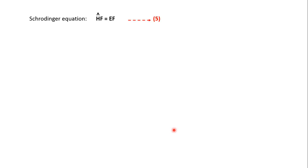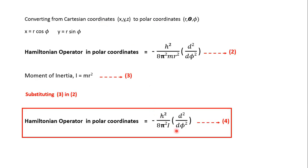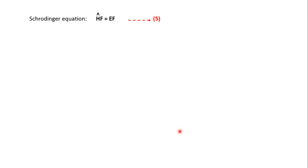Writing the Schrödinger equation as Ĥf = Ef, we use f instead of ψ. In polar coordinates we have r, θ, and φ. When considering only the variable r, we represent the function as capital R; only θ gives capital P; and only φ gives the function f. So f is a function of φ, P is a function of θ, and R is a function of r. Since the Hamiltonian operator here contains only φ, we take the function as f(φ).